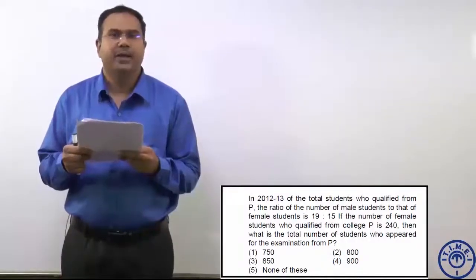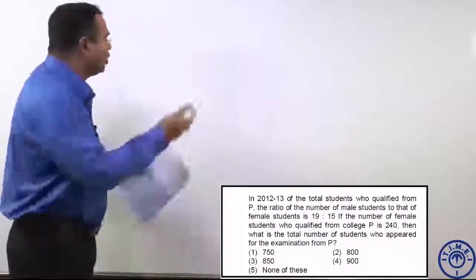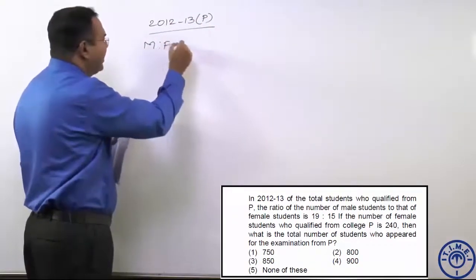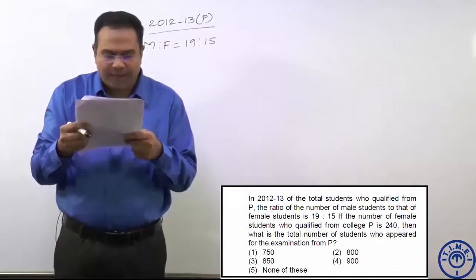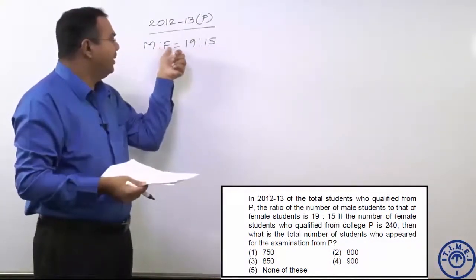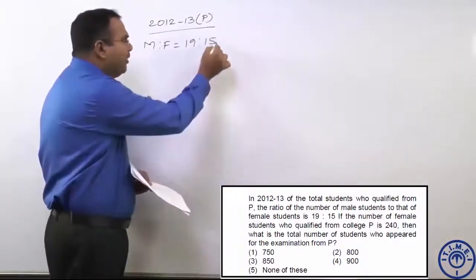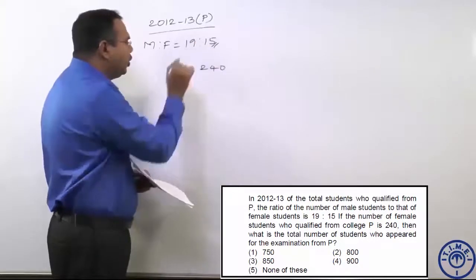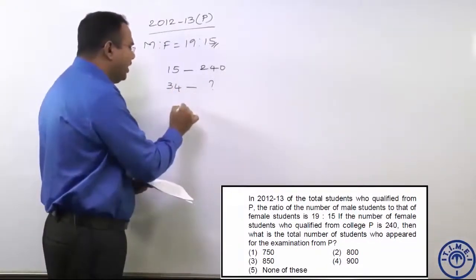What is the information given? In the year 2012-13 for college P, the ratio of males and females is given as 19 to 15. The number of female students who qualified from college P is 240. Now, the ratio of male students to female students who qualified is 19 to 15. So number of female students is 240, which is 15 parts. So 15 parts equals 240. Total number of students qualified is 34 parts. By cross multiplication, we get the total number of students qualified as 544.